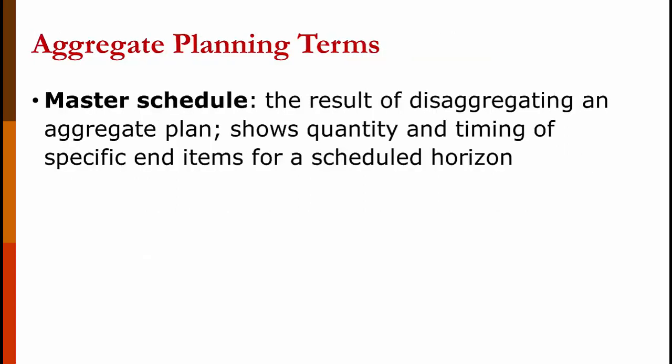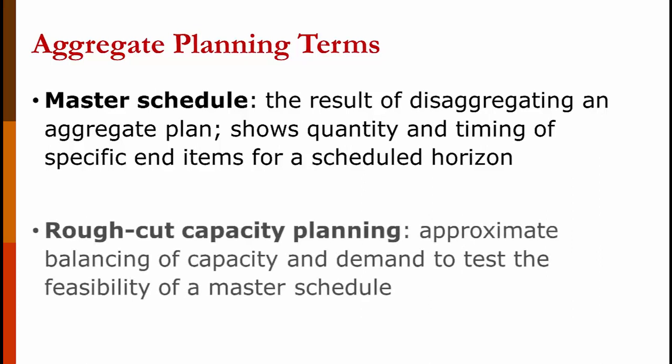The master schedule is the result of disaggregating an aggregate plan. It shows quantity and timing of specific end items for a scheduled horizon — basically it tells you how much of every single item you're going to produce period by period. Typically, this is scheduled weekly. Rough cut capacity planning is the process of approximately balancing the capacity and demand to test feasibility of a master schedule. We perform some preliminary tests to make sure that we have adequate capacity to support the master schedule.